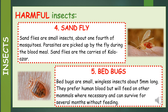Number 5: Bed bugs. Bed bugs are small wingless insects, about five millimeters long. They prefer human blood, but will feed on other mammals where necessary, and can survive for several months without feeding.